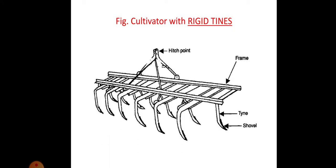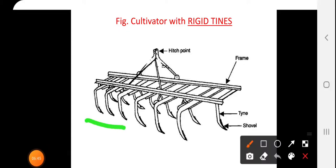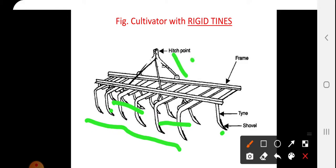In a cultivator with rigid tines, the number of tines at the front is typically three and three, with additional tines at the back. This example shows a thirteen tine cultivator.